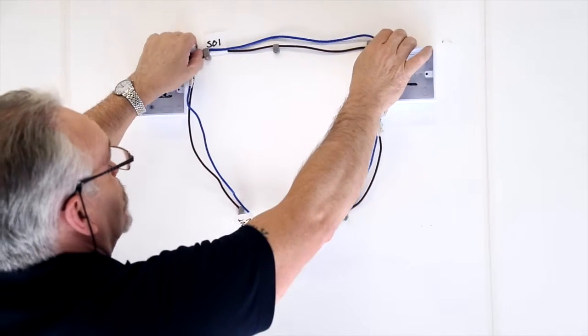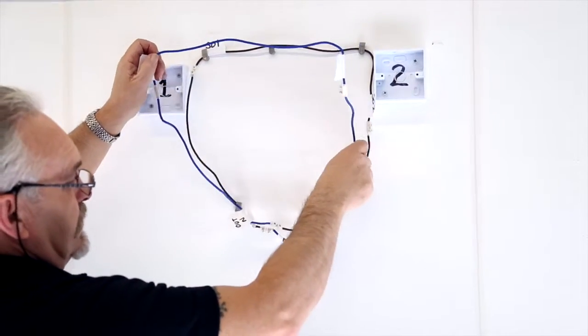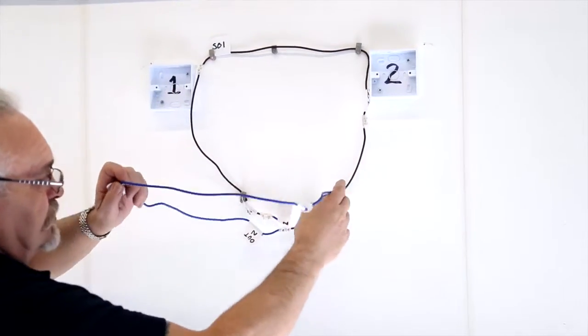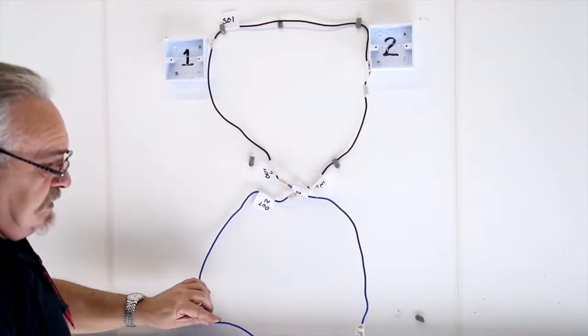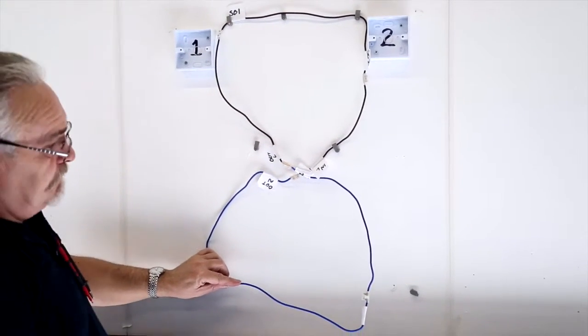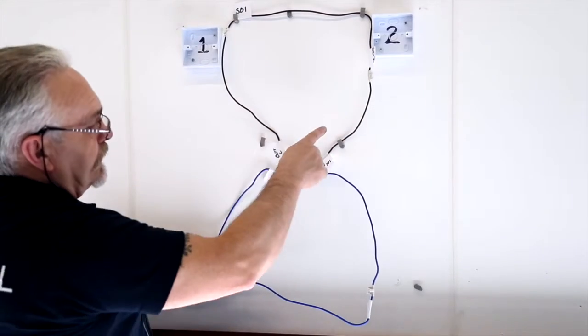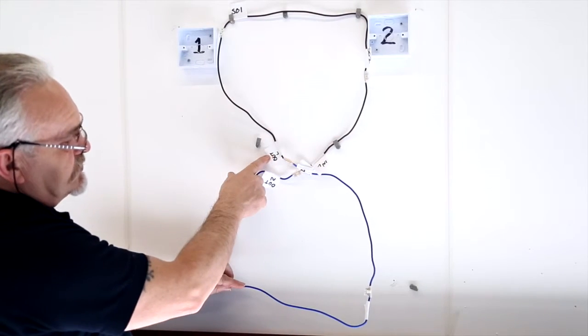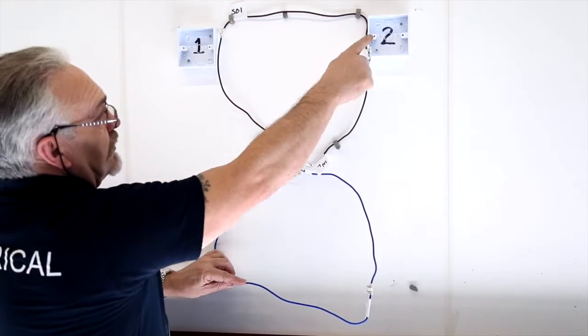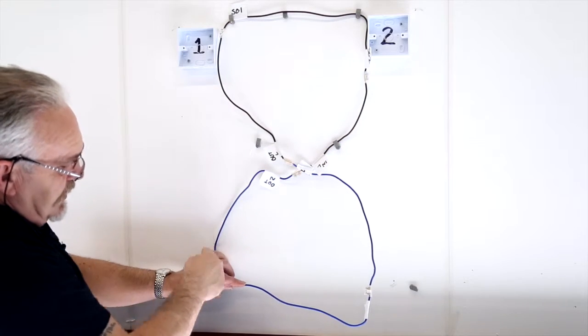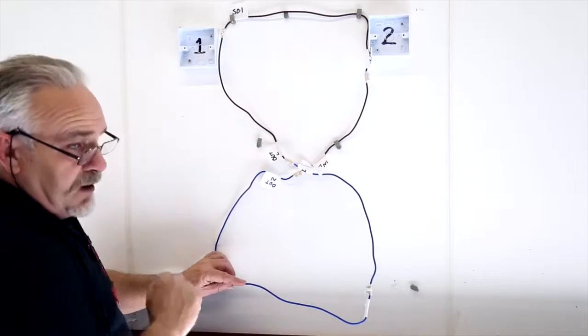Now, I'm going to lift the neutral out. I'm not doing anything. Just lifting it out. What I want to just show you is the figure of eight. That's your figure of eight. So start from outgoing line, incoming line, outgoing neutral, incoming neutral, and back again.